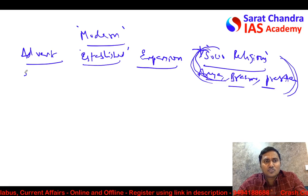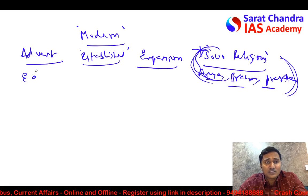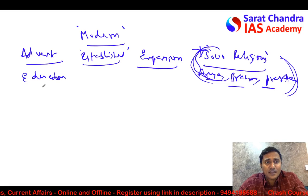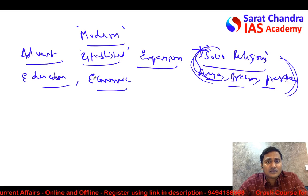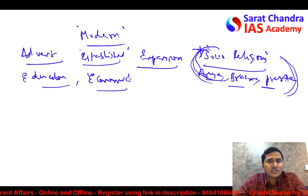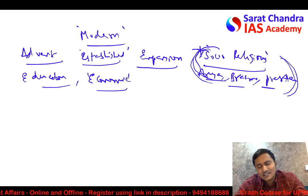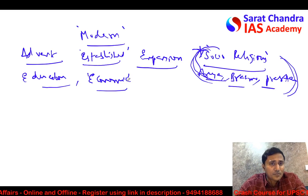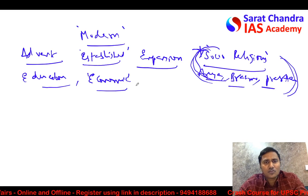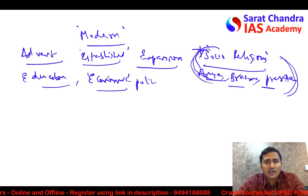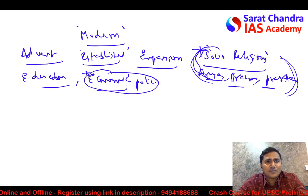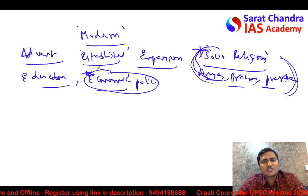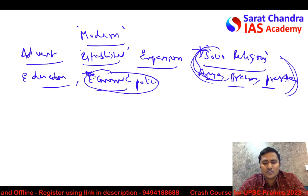Then the education policies — important education policies of the British in India — and more than education policies, the economic policies. Particularly the effect of economic policies on India's agriculture, Indian industries, Indian artisans, exports, and imports — overall, the effect of British economic policies on India is a very important and conceptual topic. Facts may not be very important here, but you should understand this concept very well. You can read Bipin Chandra or Spectrum.